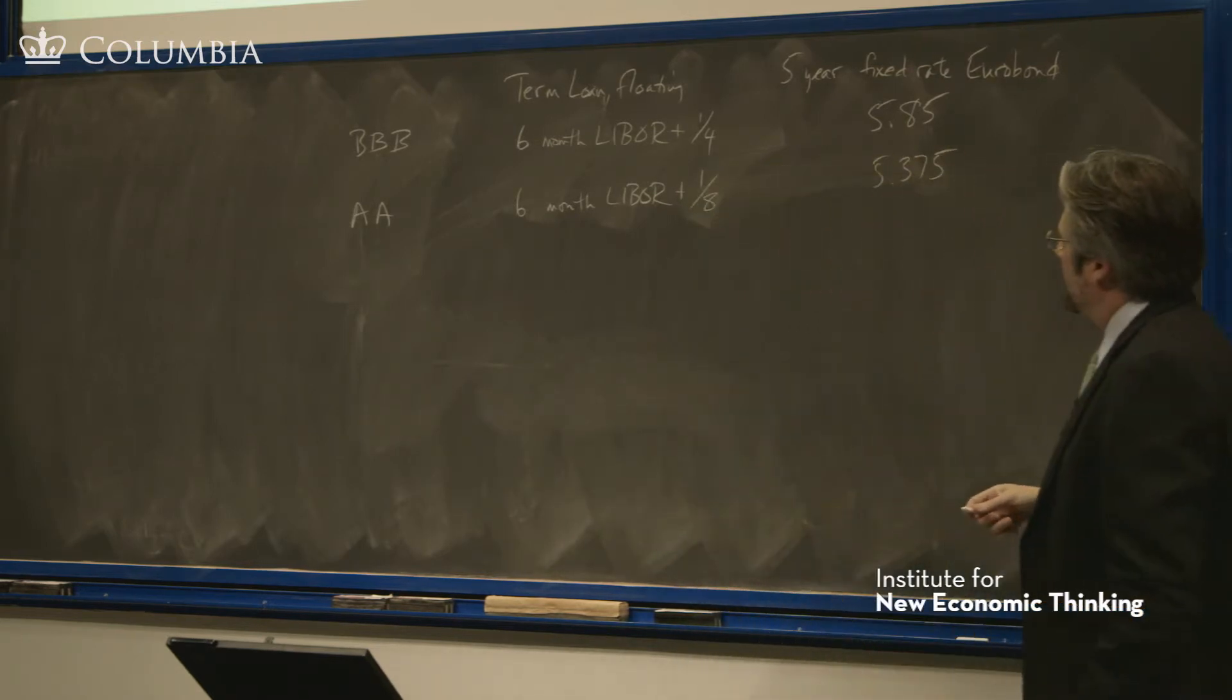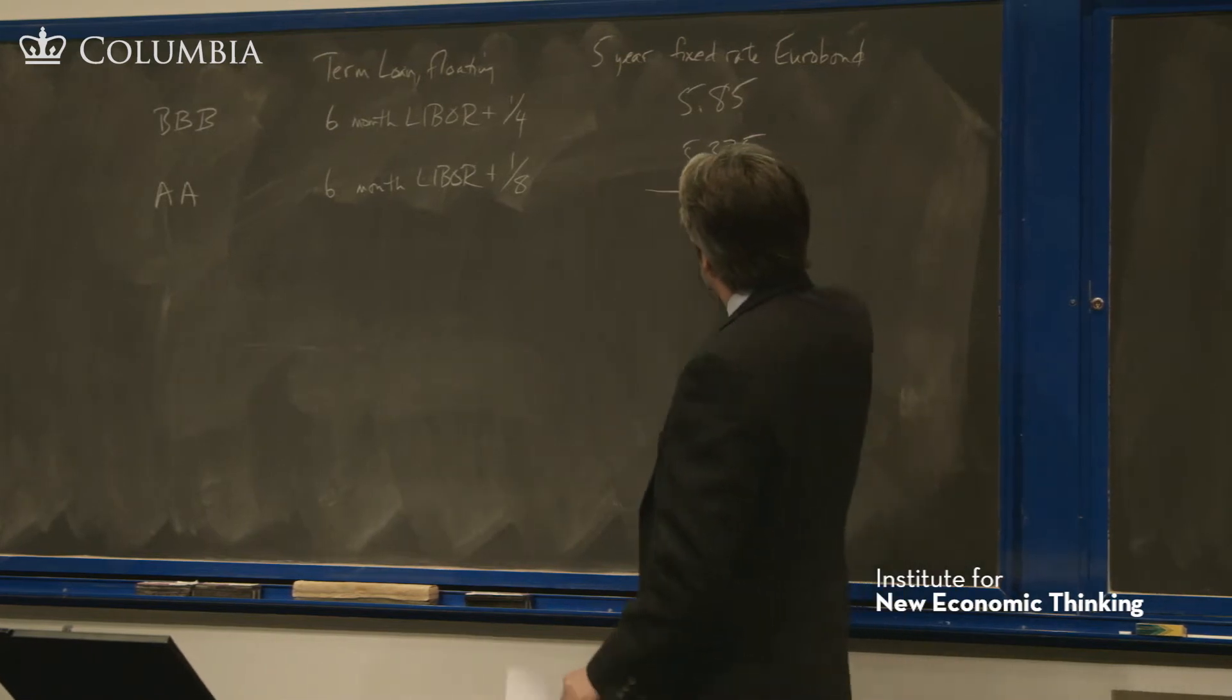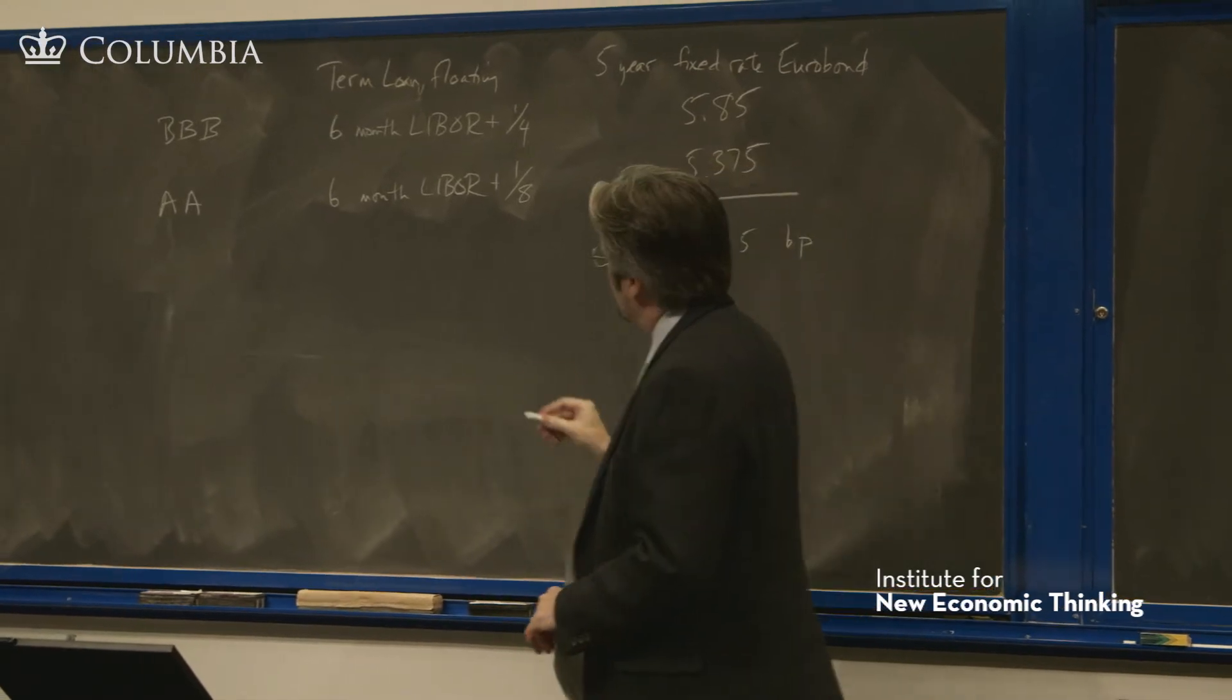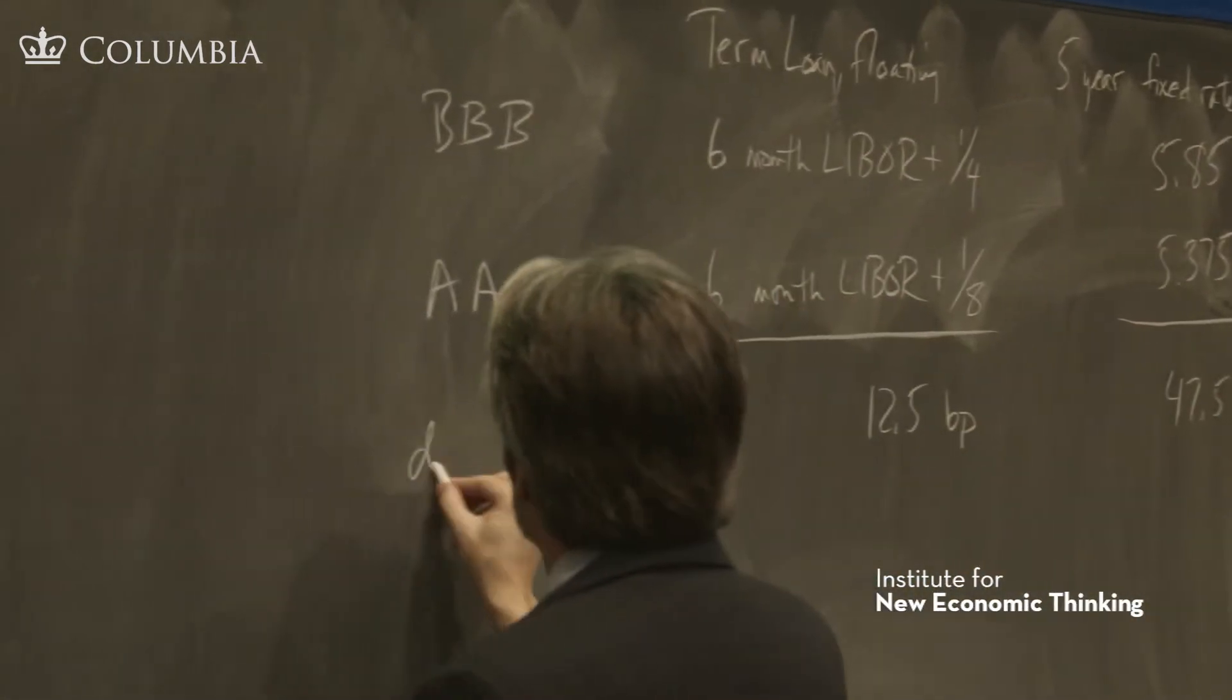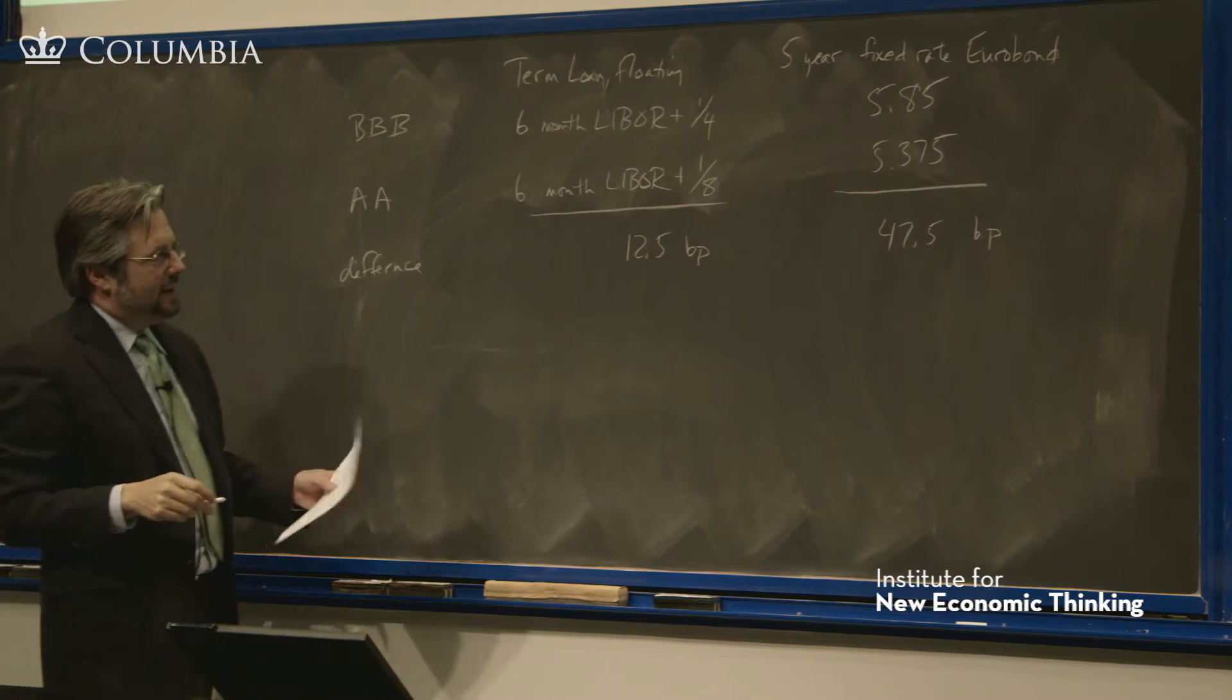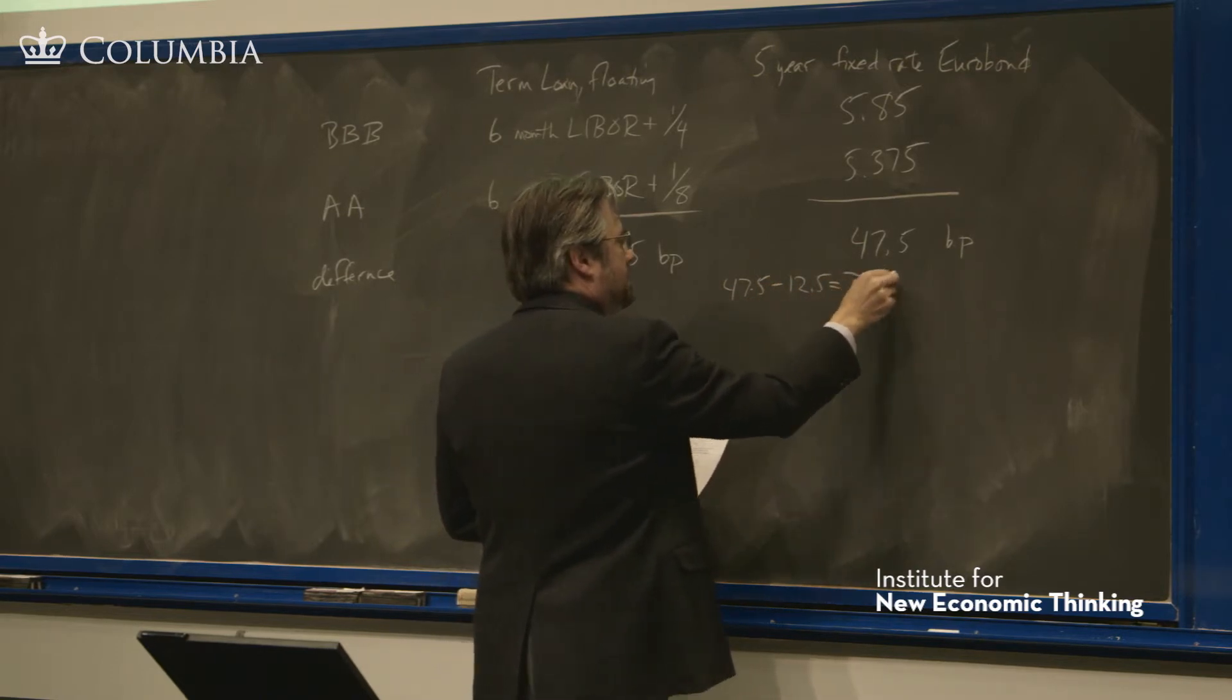Here we get 5.85% and 5.375%. Once again, Double A gets a lower quote than Triple B. The difference is 47.5 basis points here, and the difference here is 12.5 basis points. That means we have 47.5 minus 12.5, which is 35 basis points to work with.